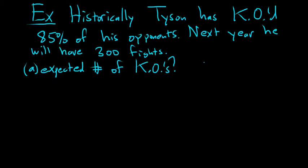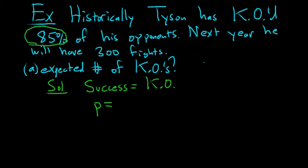So this is a binomial probability question, right? Because there are two options: either Tyson KOs an opponent or does not KO an opponent. So in this problem, success is KO. And little p is the probability of success. Well, there's an 85% chance that Mr. Tyson knocks out an opponent. So p is 0.85.